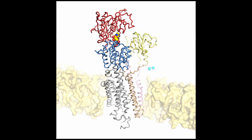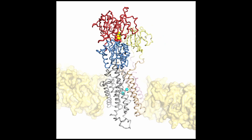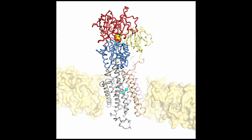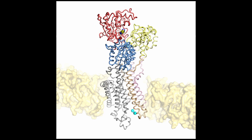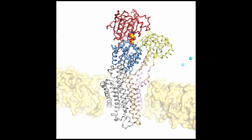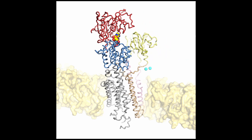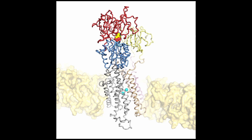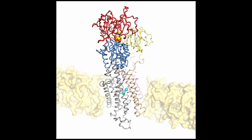Our single molecule approach also allows us to shed light on what limits how fast the pump can go. Surprisingly, it wasn't the big conformational changes but the chemistry of the phosphorylation reaction that offers the overall rate-limiting step in continuous pumping. We could then add this kinetic information to a morph so the states have realistic lifetimes.